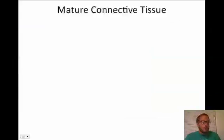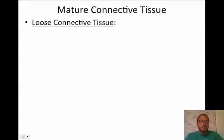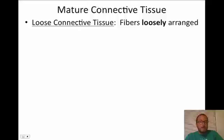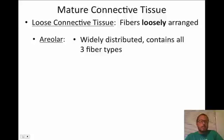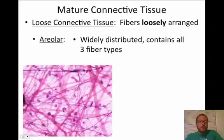Our very first mature connective tissue category is loose connective tissue, where fibers are loosely arranged and we see a lot of cells and fibers. The first type is areolar connective tissue — the most widely distributed connective tissue. It contains all three fiber types: collagen, elastic, and reticular fibers. The black fibers are elastic, the big thick pink ones are collagen, and the wispy ones are reticular. You can also see the cells — those little nuclei all over the place.